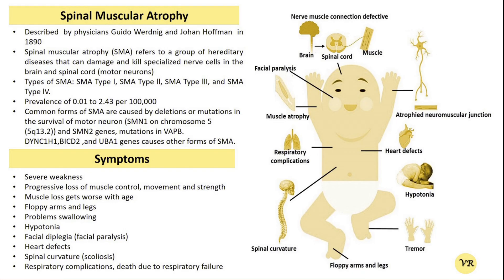Mutation or deletion in the SMN1 gene leads to the loss of motor neurons in the spinal cord. The number of copies of the SMN2 gene can also be analyzed, as this gene produces a backup SMN protein that can partially compensate for the lack of SMN1 protein. The number of SMN2 copies is linked to the severity of SMA.